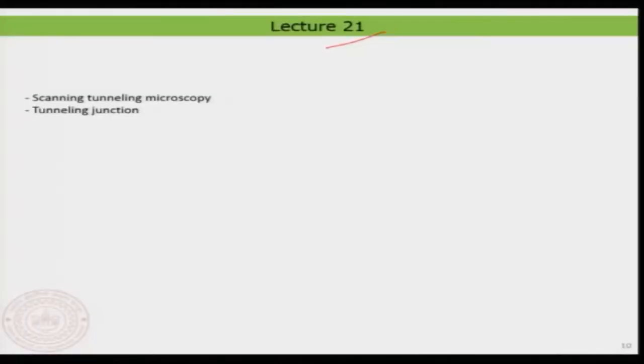Hello everyone, welcome back to the new lecture, lecture 21. In this we would continue scanning tunneling microscopy in more detail and particularly we look at something known as a tunneling junction — that is the quantum mechanical thing we want to look into. We try to understand what is basically that we measure, or what is the origin of the tunneling current itself.